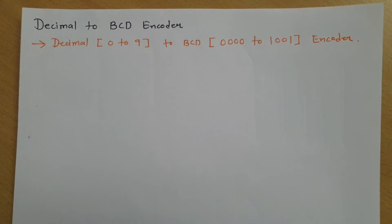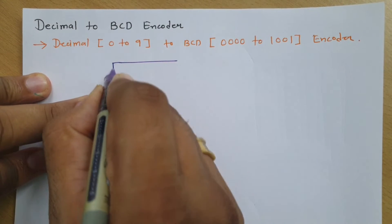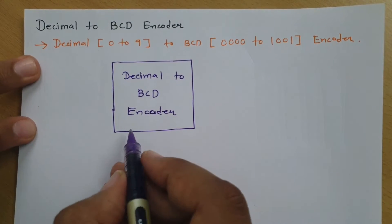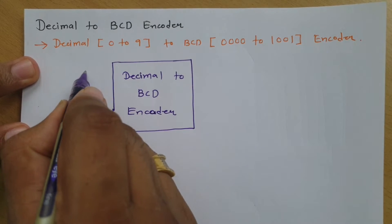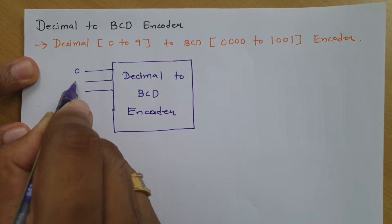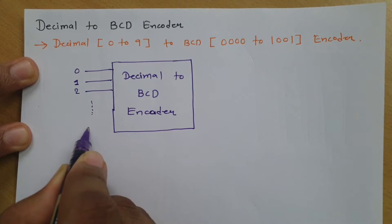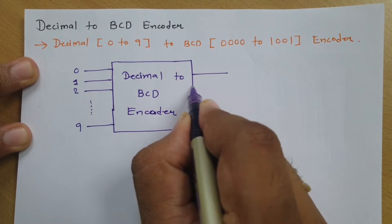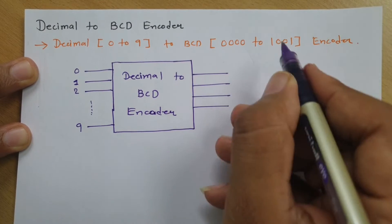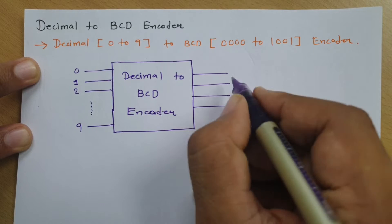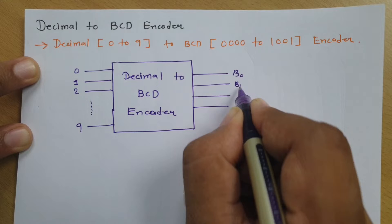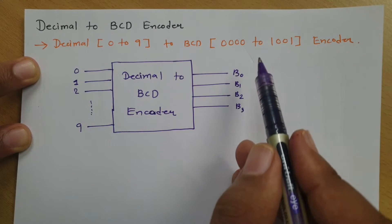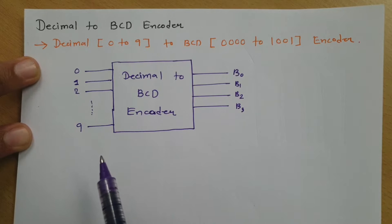Let me explain this by block diagram first. For a decimal to BCD encoder, we have a total of 10 inputs, starting from 0, 1, 2, and going up to 9. We have a total of 4 outputs: B0, B1, B2, and B3. So we have 10 inputs and 4 outputs — that is the decimal to BCD encoder.